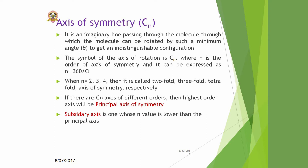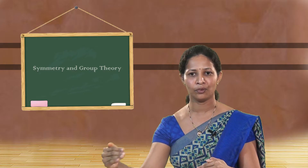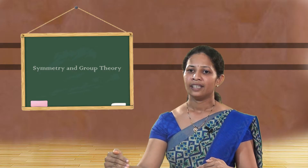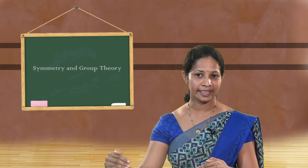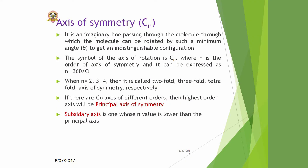N is the order of the axis of symmetry, and it can be expressed in terms of theta as N = 360 / theta. When N is 2, it is known as a 2-fold axis of symmetry; if N is 3, it is 3-fold; N is 4, 4-fold, and so on. If there are C_N axes of different orders, then the highest order axis will be the principal axis of symmetry, and all other axes are known as subsidiary axes.